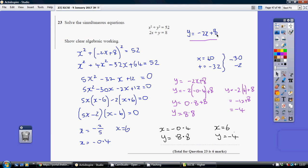I then take this and substitute that into our other equation. So I've got x squared plus, but rather than y I have minus 2x plus 8 all squared equaling 52.